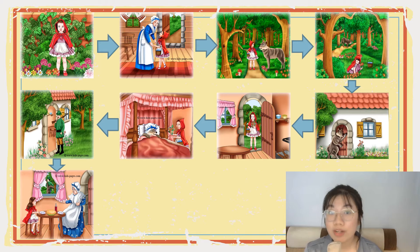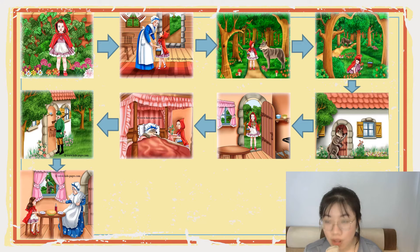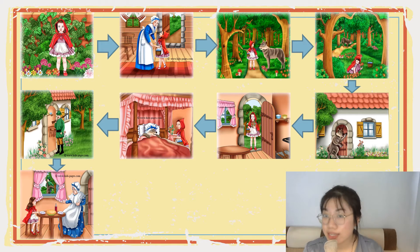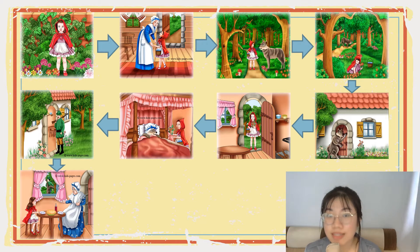So, what are these, class? They are pictures. And are they in order? Yes, they are. We can say that it is a sequence of story. Class, repeat after me: sequence.